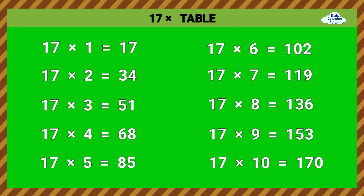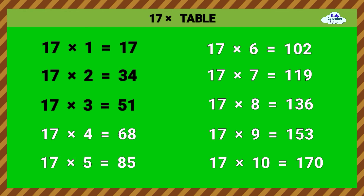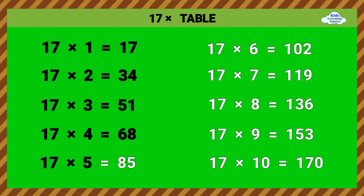17 times table. 17 times 1 equals 17. 17 times 2 equals 34. 17 times 3 equals 51. 17 times 4 equals 68. 17 times 5 equals 85.